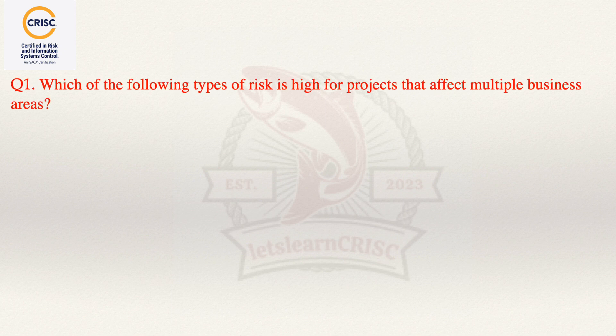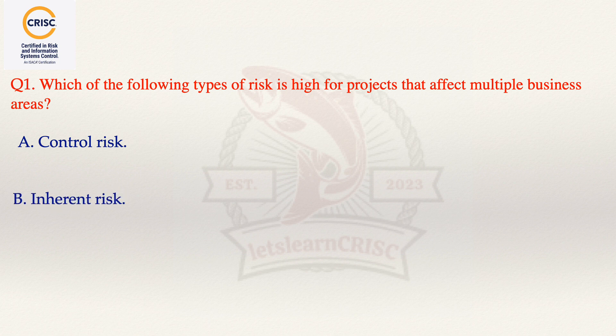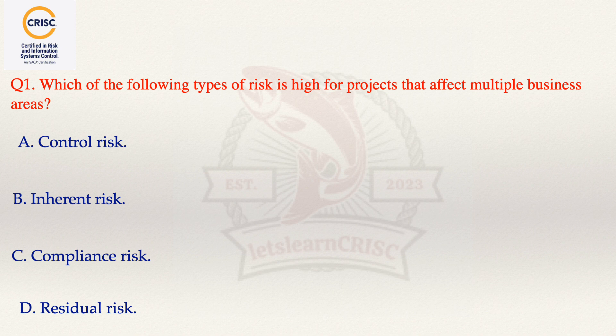The first question states: which of the following type of risk is high for a project that affects multiple business areas? The options are: option A, control risk; option B, inherent risk; option C, compliance risk; and option D, residual risk. The correct answer is option B, that is inherent risk.